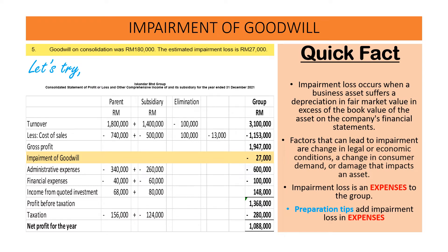Next, the adjustment for the impairment of goodwill. Impairment loss occurs when a business asset suffers a depreciation in fair market value in excess of the book value of the assets on the company's financial statement. Factors that can lead to impairment are a change in legal or economic conditions, a change in consumer demand, or damage that impacts an asset.